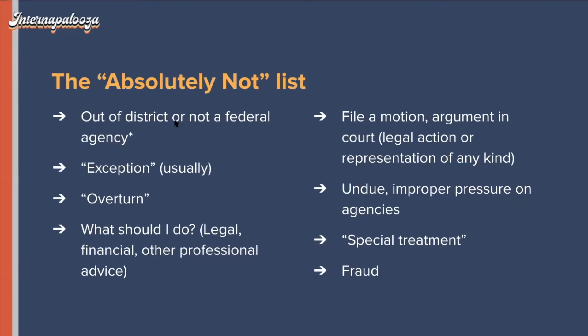Similarly, you can't ask for exceptions. You cannot privilege one constituent over another. If I have two constituents who've both been denied for the same benefit, I have to tell them both the same thing. I can't say, 'Hey Social Security, can you just make an exception for Mrs. Jones?' What I used to tell constituents is: I am here to make sure the law is fair to everybody, not to ask for an exception to the law for anybody.